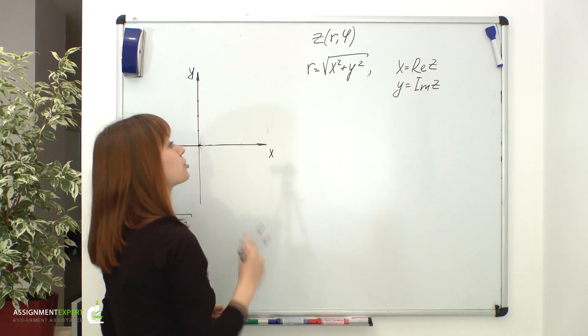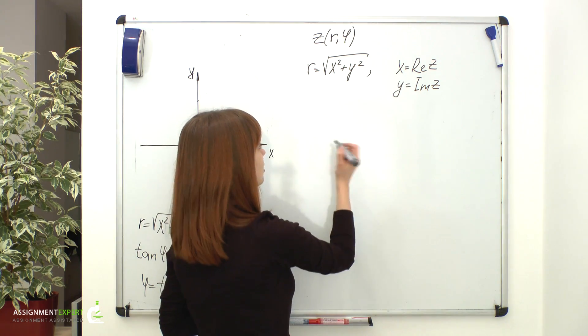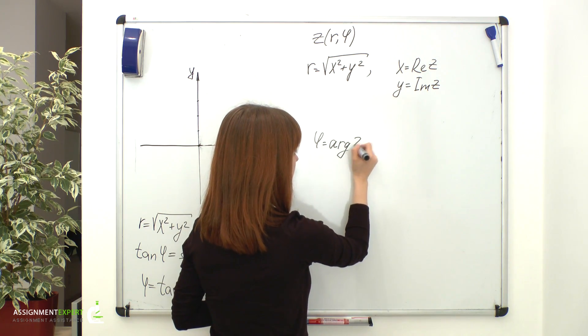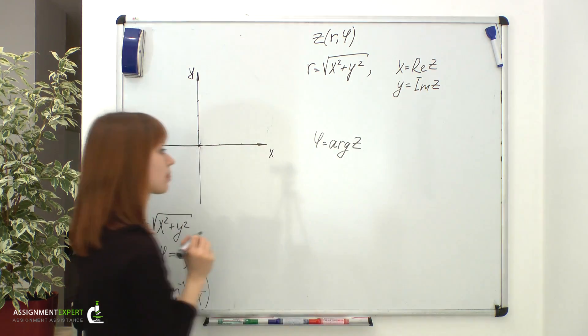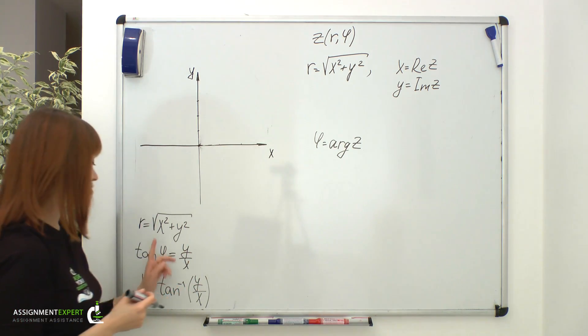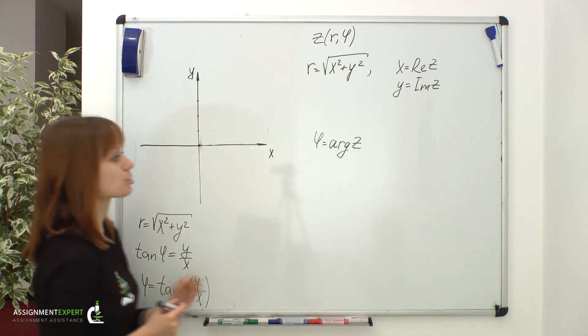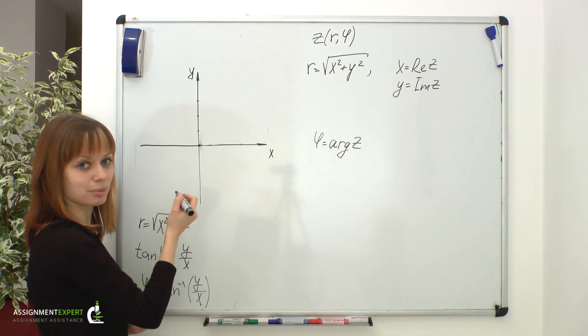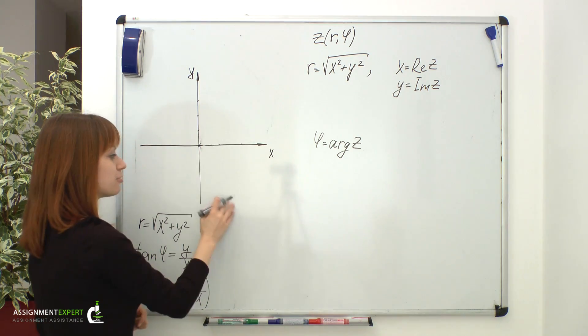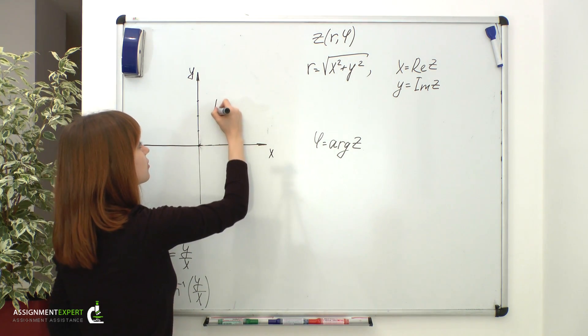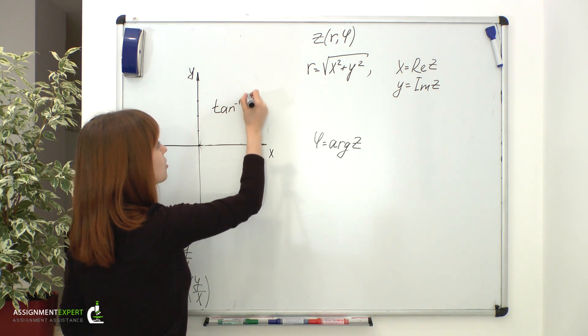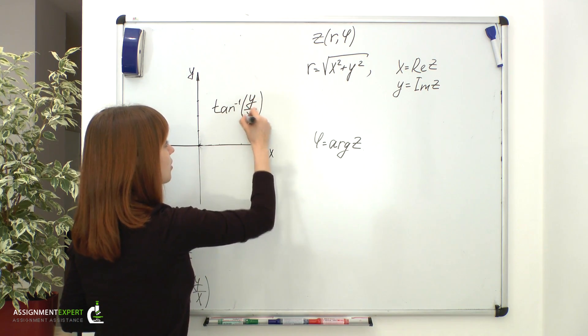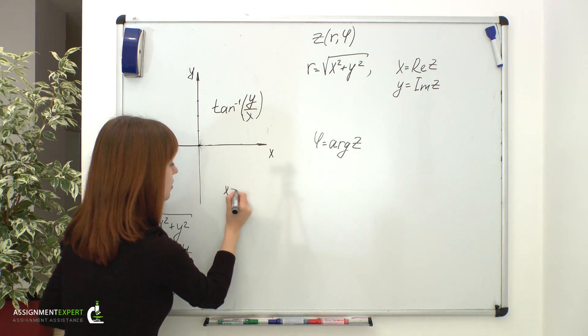And the angular coordinate phi is also known as the argument of a complex number. Due to some peculiarities of the inverse tangent function, the expression for argument of z may change depending on location of a point on the coordinate plane. So for the first and fourth quadrants, we have inverse tangent of y over x.